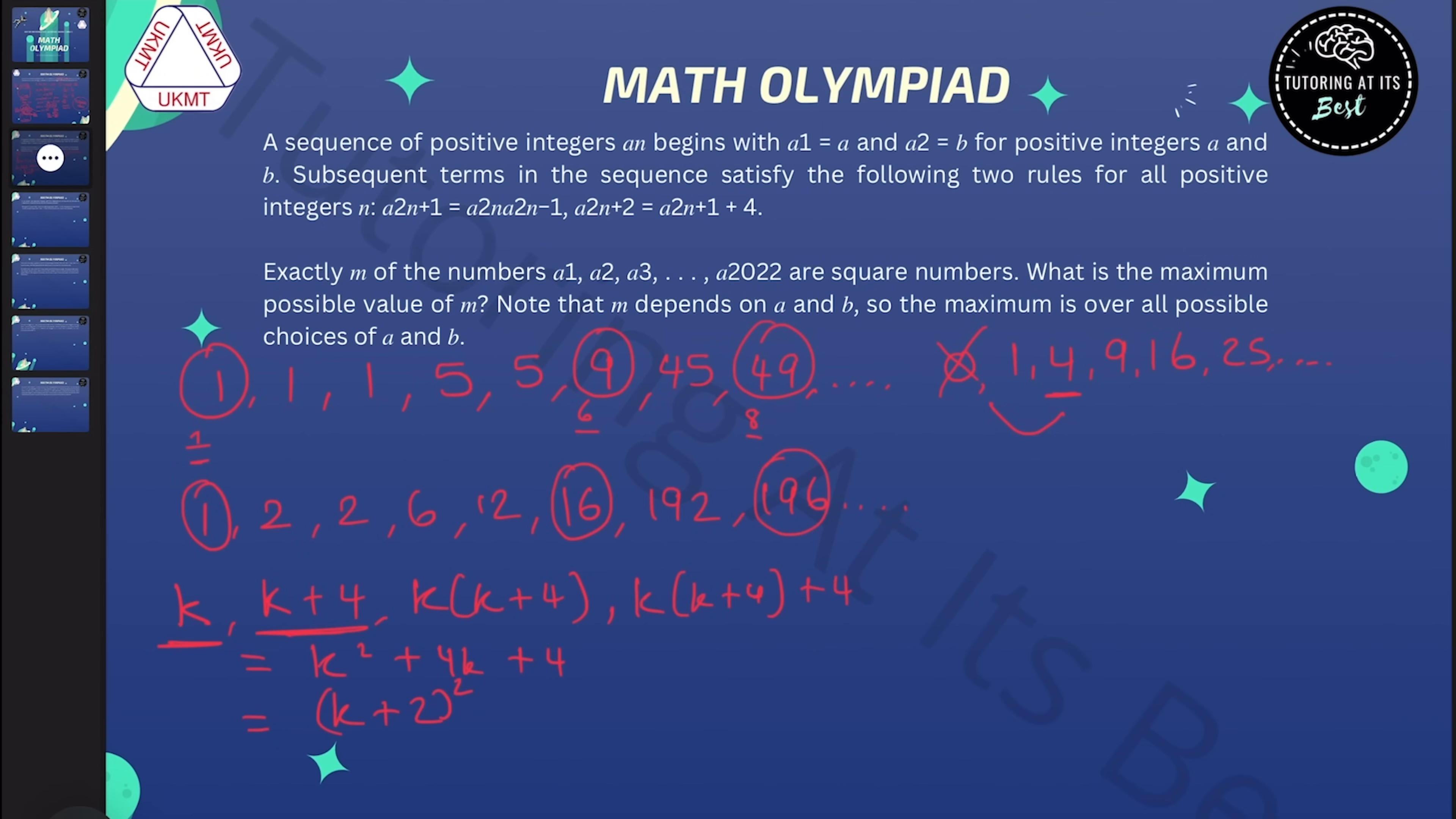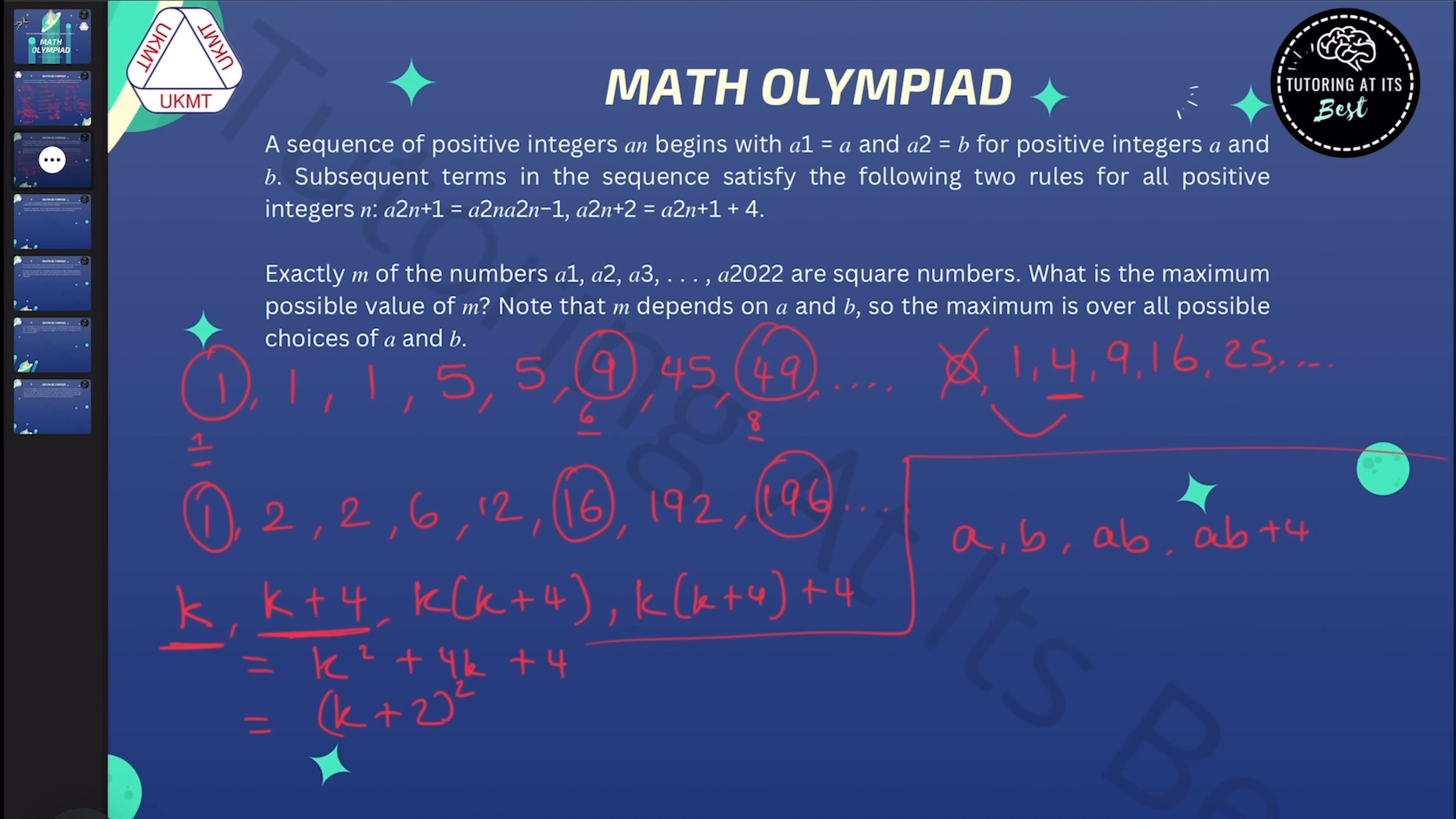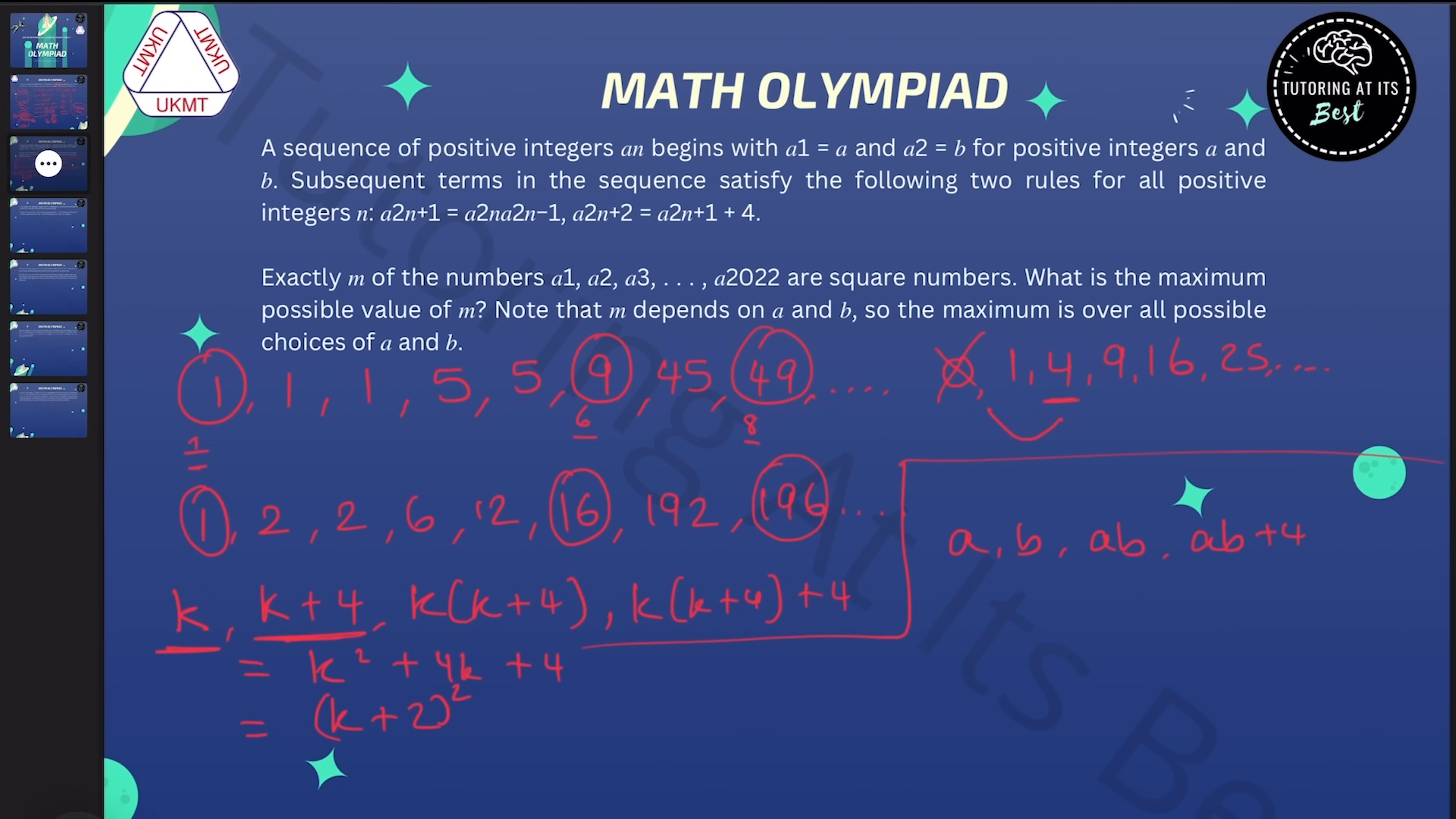So let's think about the first four terms now. I'm going to take a, b, a times b, and a times b plus 4. Now, as we've said, there's no positive squares that differ by 4. So we can't have a times b and a times b plus 4 as both squares.